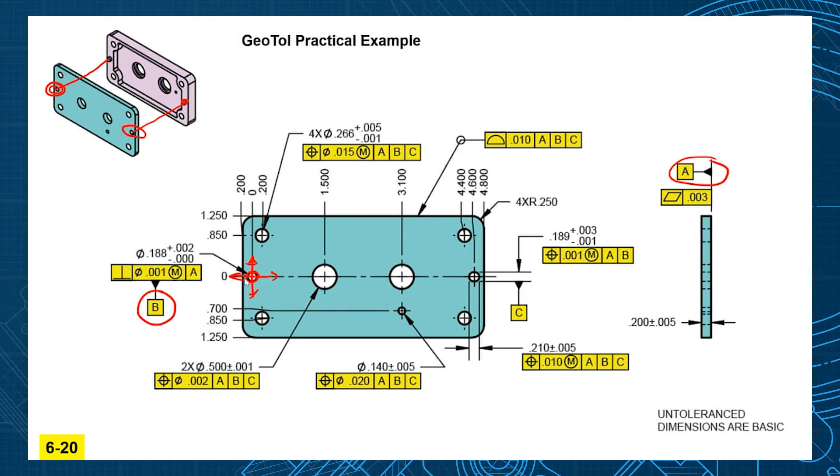Now what degree of freedom would still be left? That would be your rotation, your clocking. And so they use the slot. And the slot width in this direction is what's stopping the rotation C.